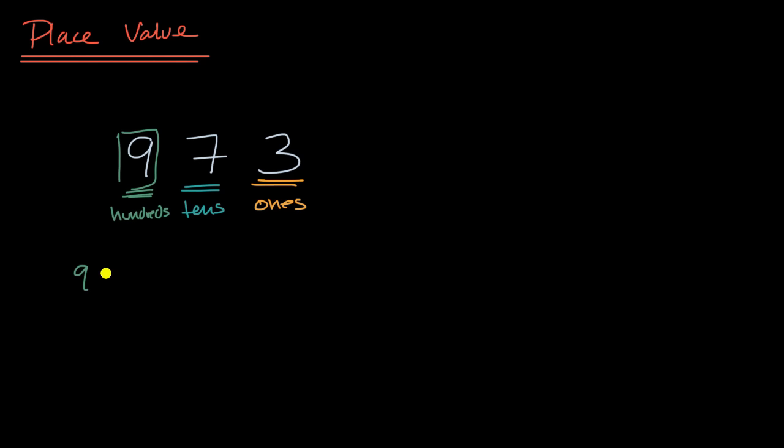And so this nine doesn't just represent nine, it represents 900, or we could write that as 900. Similarly, the seven doesn't just represent seven, it represents seven tens, or 70. This three represents three ones, so it actually does represent three.